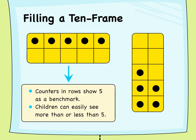Setting counters in rows show 5 as a benchmark. Then children can easily see if a number is more or less than 5.